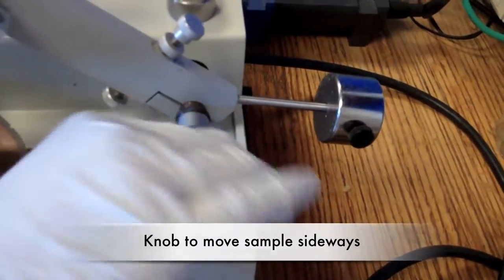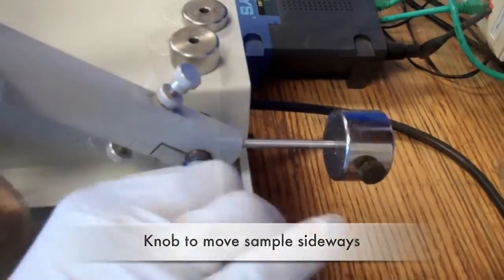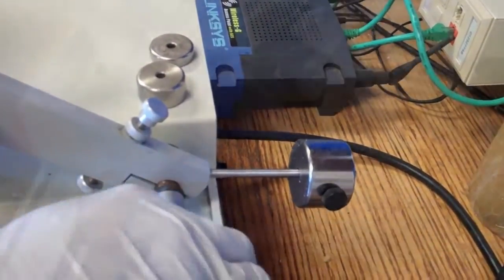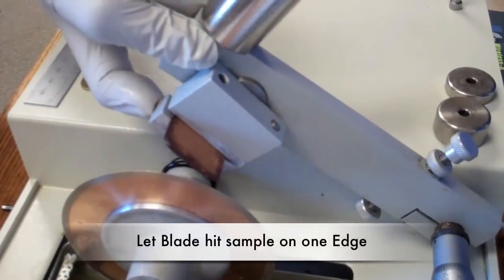The sample can be translated using the knob at the back of the machine. Each rotation is about one third of a millimeter or three turns will result in approximately a one millimeter translation. Once you reach the location of your first cut, you can set the material onto the blade.